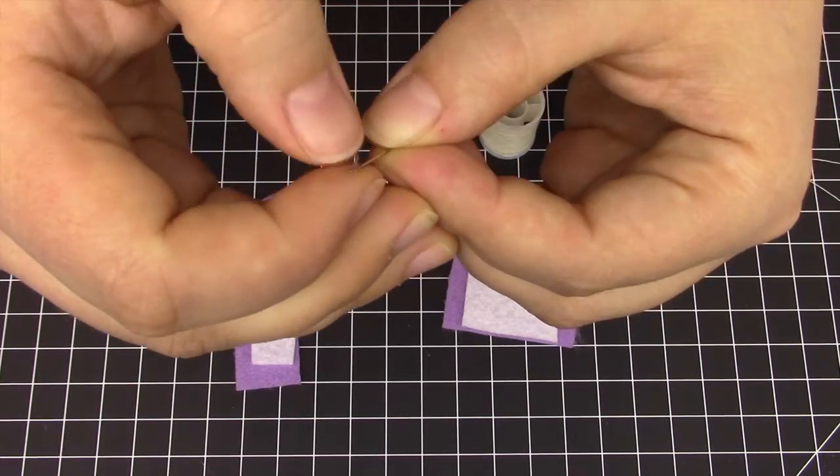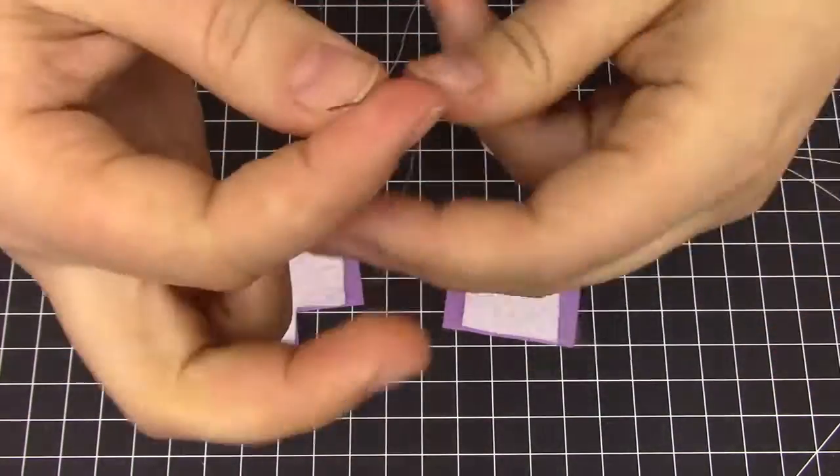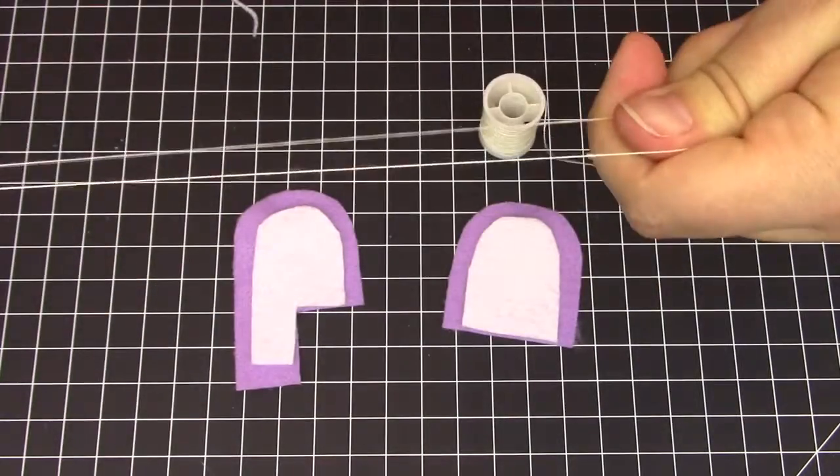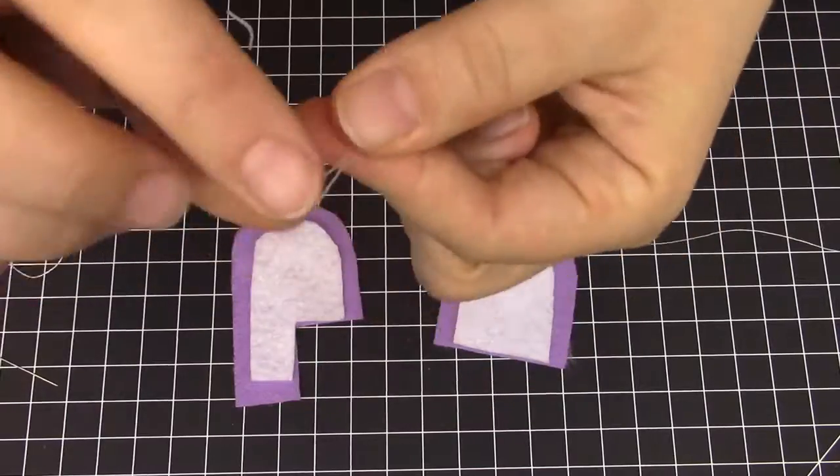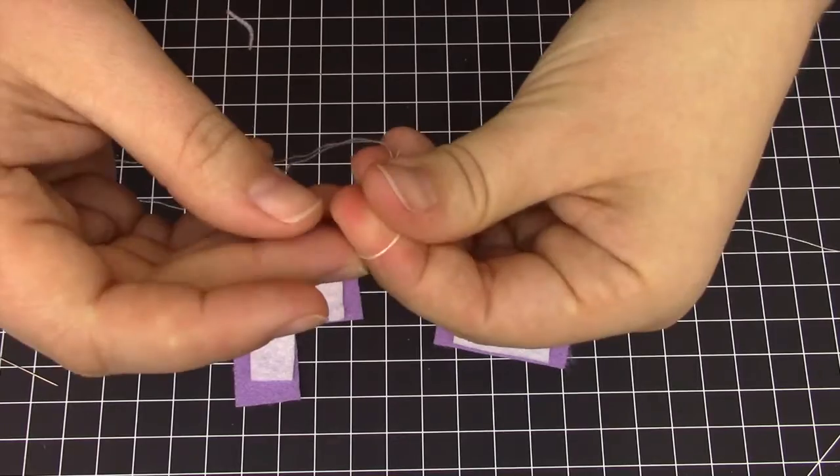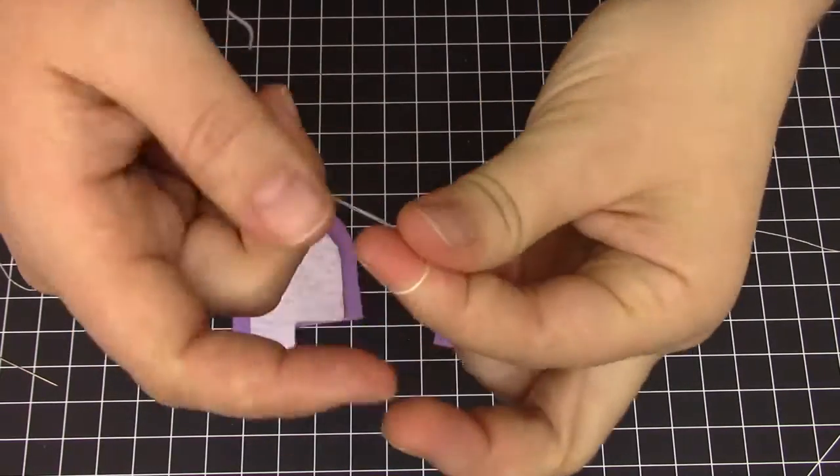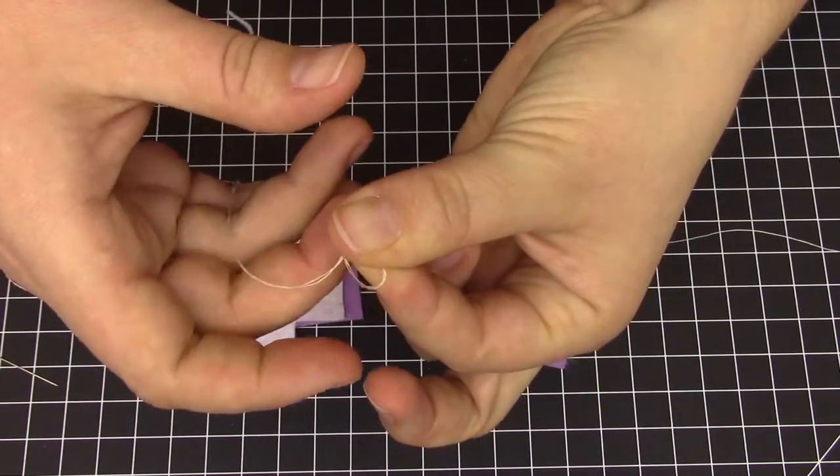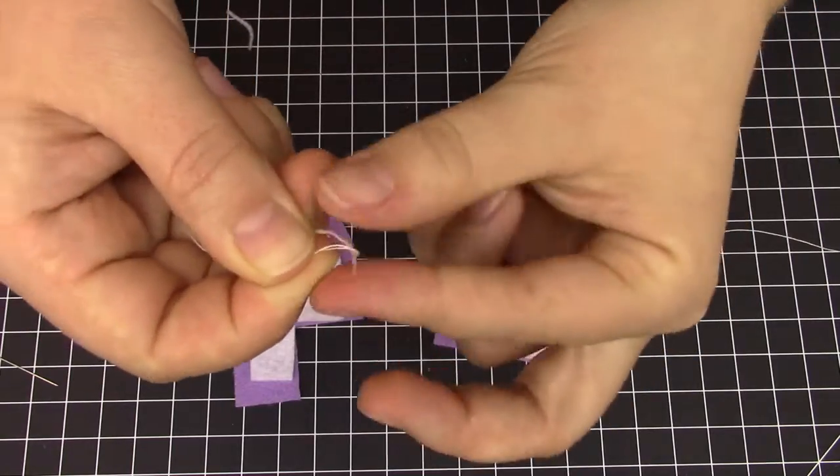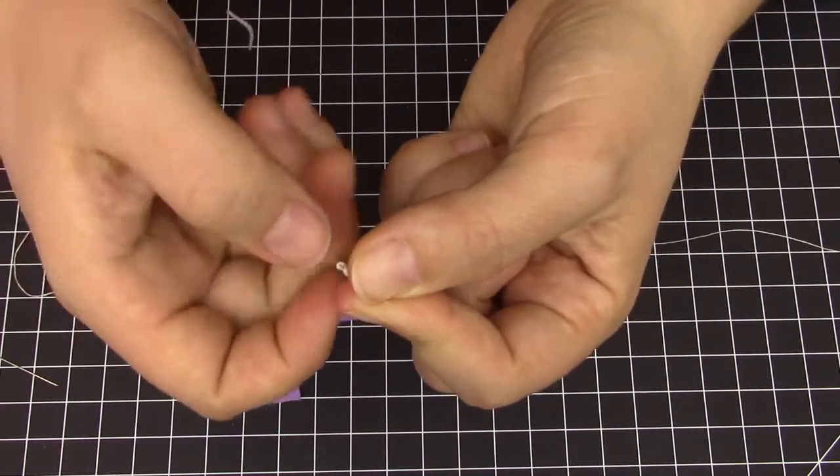Next, find your white thread and thread the needle, pulling a long length of thread. Double this up, trim the ends, and then wrap them around your finger, as shown, and slide them off, wrapping the end around to create a knot. Pull the knot tight.